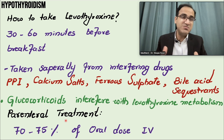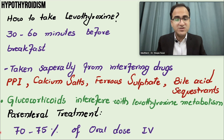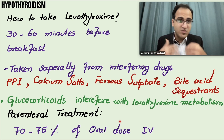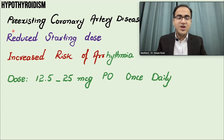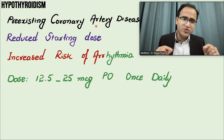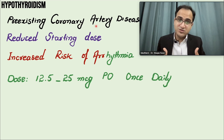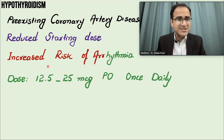For parenteral treatment — such as in myxedema coma or patients who cannot take oral medications or are on a ventilator — 70 to 75 percent of the oral dose is given intravenously. For patients with pre-existing coronary artery disease, start from a lower dose due to increased arrhythmia risk. Screen for osteoporosis and coronary artery disease. The initial starting dose in high-risk patients is typically 12.5 to 25 mcg orally once daily.